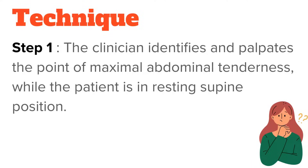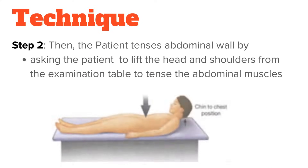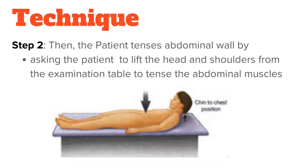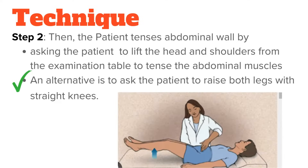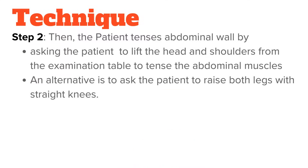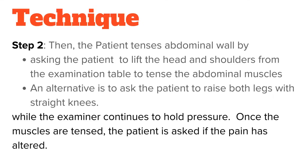Technique — Step 1: The clinician identifies and palpates the point of maximal abdominal tenderness while the patient is in the resting supine position. Step 2: The patient then tenses the abdominal wall by lifting the head and shoulders from the examination table. An alternative is to ask the patient to raise both legs with straight knees, while the examiner continues to hold pressure.